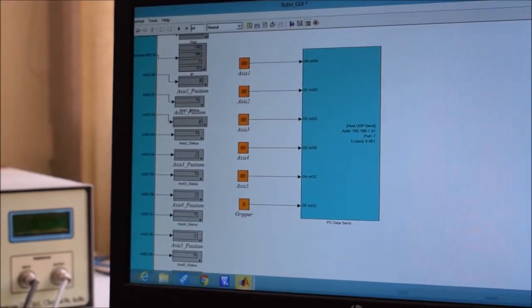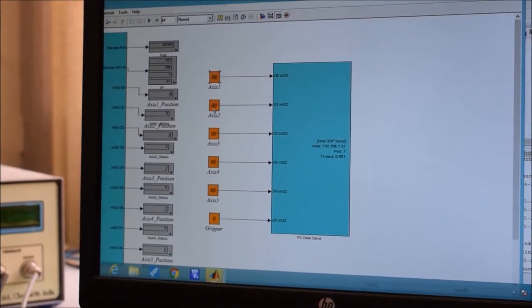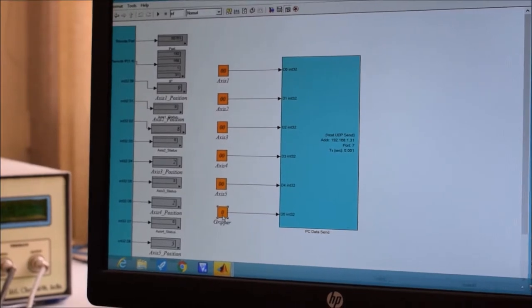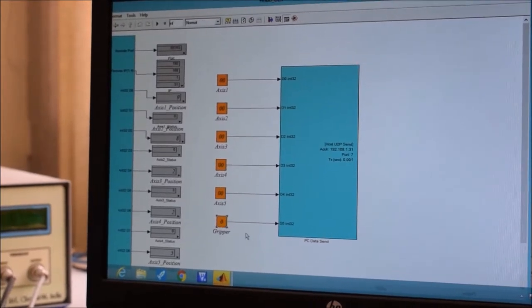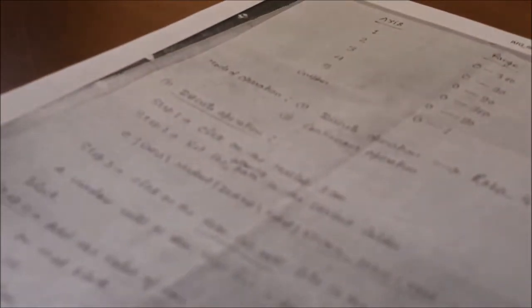This is our simulation model. In that model, there are five axis: one axis, second, third, fourth, fifth and there are gripper. In my manual, I make a data sheet for that. You can also focus on this.